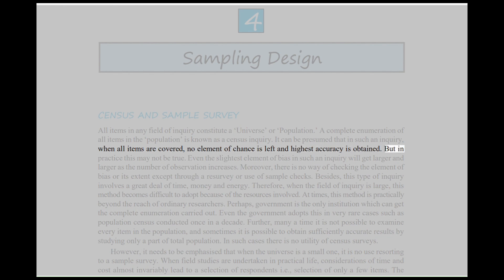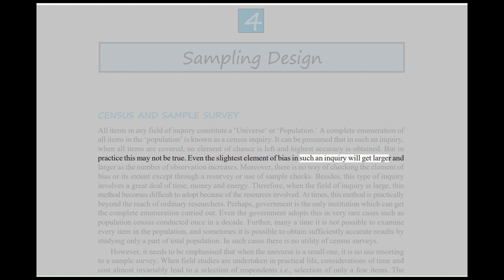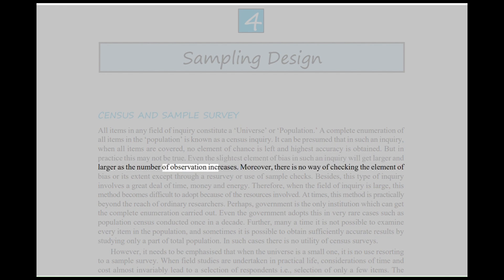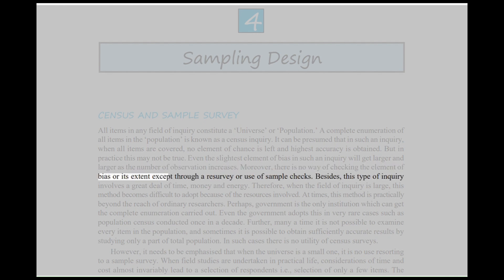But in practice this may not be true. Even the slightest element of bias in such an inquiry will get larger and larger as the number of observations increases. Moreover, there is no way of checking the element of bias or its extent except through a resurvey or use of sample checks.